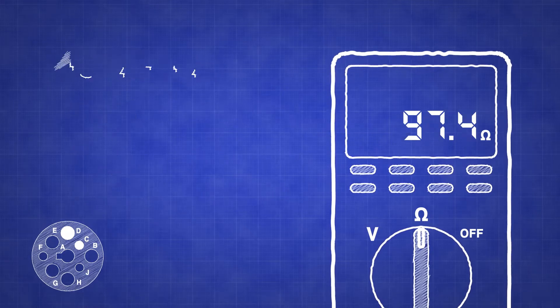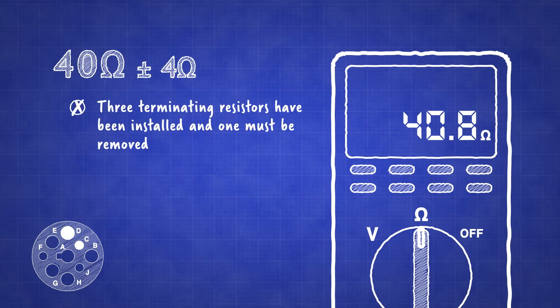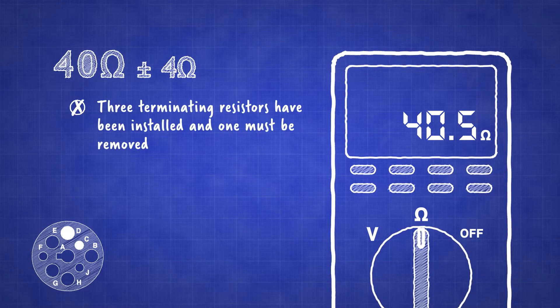If the reading is within 4 ohms of 40 ohms, then three terminating resistors have been installed, and one must be removed.